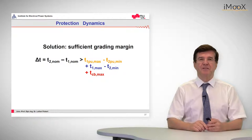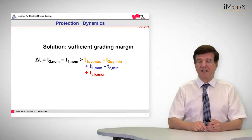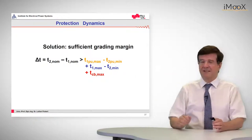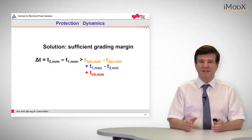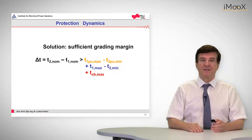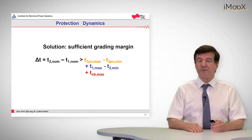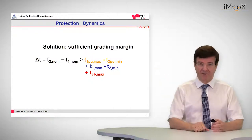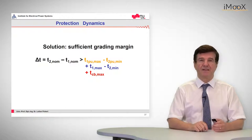Now there should be sufficient grading margin and the formula is written here. So it is the difference between the pickup times. It is additionally the difference between the delay times. And we must always take into account the circuit breaker, with its maximum arc clearing time.